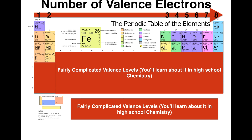The valence levels get fairly complicated after element 20, which you'll learn about in high school chemistry. Hydrogen has one valence electron, and helium has two — its energy level is full. The next energy level has eight. Lithium in group one has one valence electron, group two has two, and so on, all the way up to group 18, which has eight. That tells you the number of electrons in the outer energy level — they want to have eight, or in the case of helium, two.